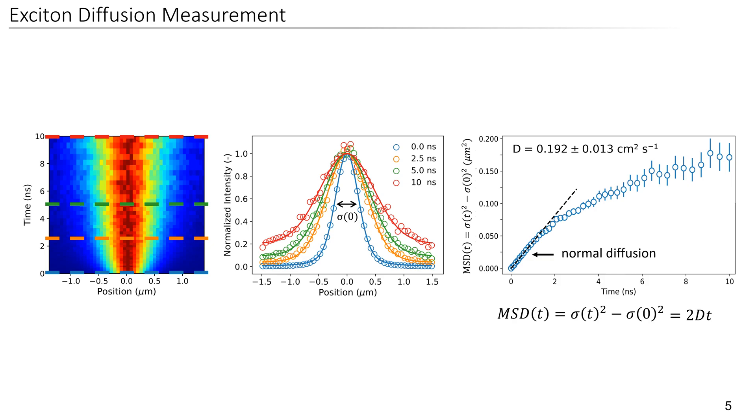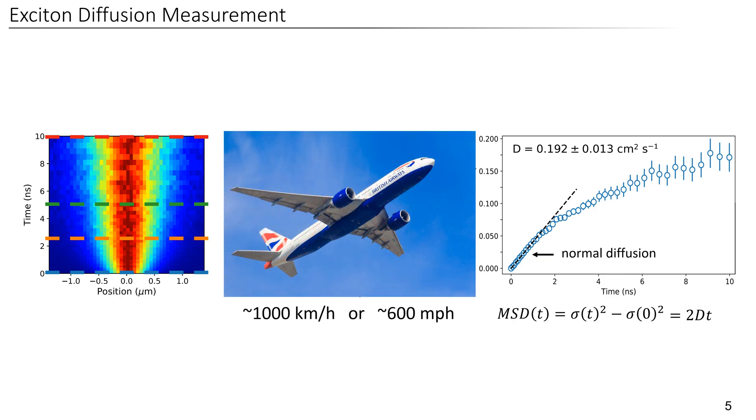I know it's hard to imagine how fast this really is, but in other words, excitons travel around 200 to 300 nanometers in only one nanosecond, which is comparable to the speed of a commercial aircraft. Some of you might be more familiar with the term mobility. However, mobility and diffusivity are just related through the thermal energy.